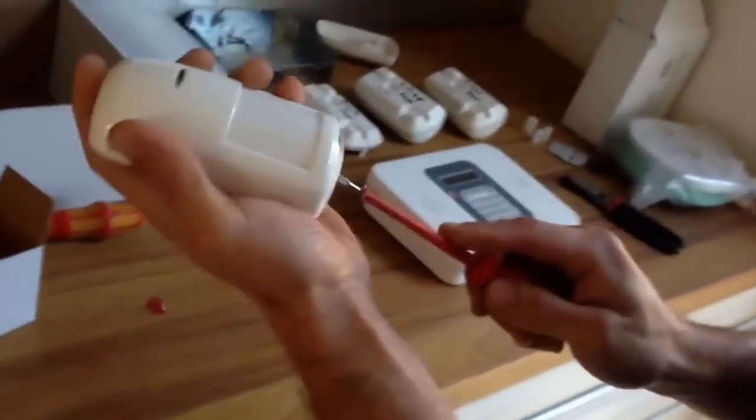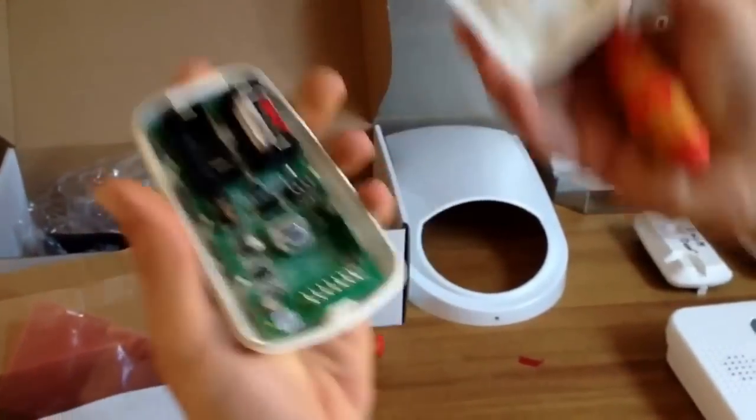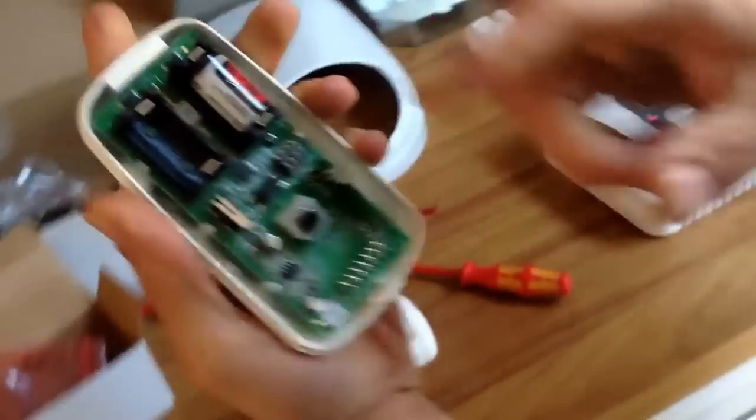So to actually get the cover off, you put the screwdriver in the bottom, prise it open, and you gently lift it up with all the battery and the circuit boards.